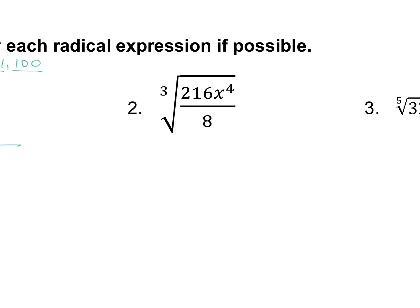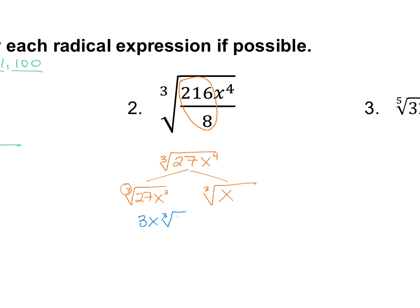Number two: take 216 divided by 8 and you get 27. So do the cube root of 27 X to the fourth. We can take the cube root of 27, but we can't take the cube root of X to the fourth. For X: X to the third is divisible by three, which means you have one X left over. So the cube root of 27 X to the third is three times X, and then you still have the cube root of X. That's your simplest answer.